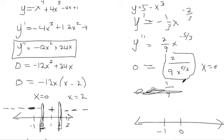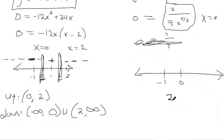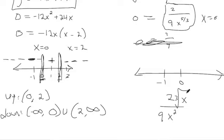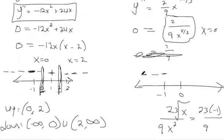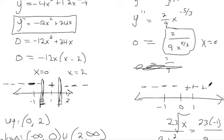Let's check concavity to the left and right. Plugging negative 1 into the second derivative — rewrite it as 2 over the cube root of x divided by x squared, since 1/3 minus 2 equals negative 5/3. The cube root of negative 1 is negative 1, and negative 1 squared is positive 1, so we get a negative value — concave down to the left. Plugging in 1 gives a positive number, so everything to the right of 0 is concave up, everything to the left is concave down.